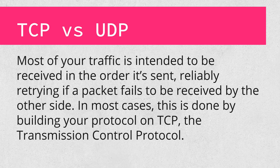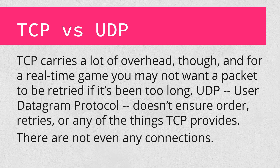One key thing to note regarding games is how data is actually sent to and from servers. In most web scenarios, we want traffic received in order, we want retries on failure, and we want data to appear as a stream. These things are handled by TCP — the Transmission Control Protocol — which underlies everything from HTTP and HTTPS to most other connections. All of those assumptions are great for browsing the web, but each one carries overhead that might get you killed in Quake if your connection drops a couple packets. In fact, you probably don't even want to know the movements a player made a couple seconds ago — you only care where they are now. Clearly, TCP isn't the best transport for most real-time games.